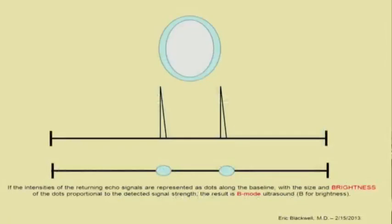So that's the idea. Then, the next step from amplitude mode is, instead of spikes, let's make bright dots. And the brighter the dot, it corresponds to the taller spike. So now this is B mode, the simplest form of B mode.